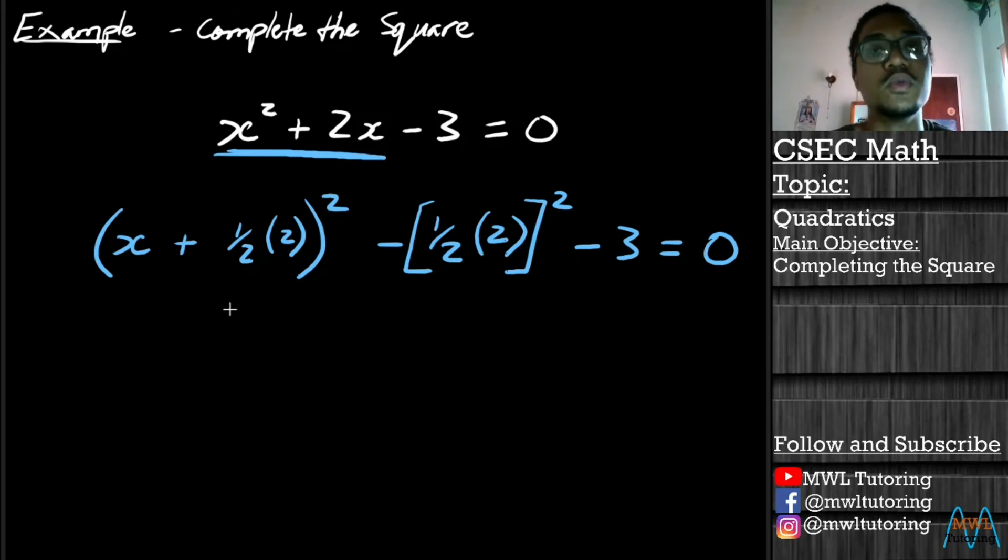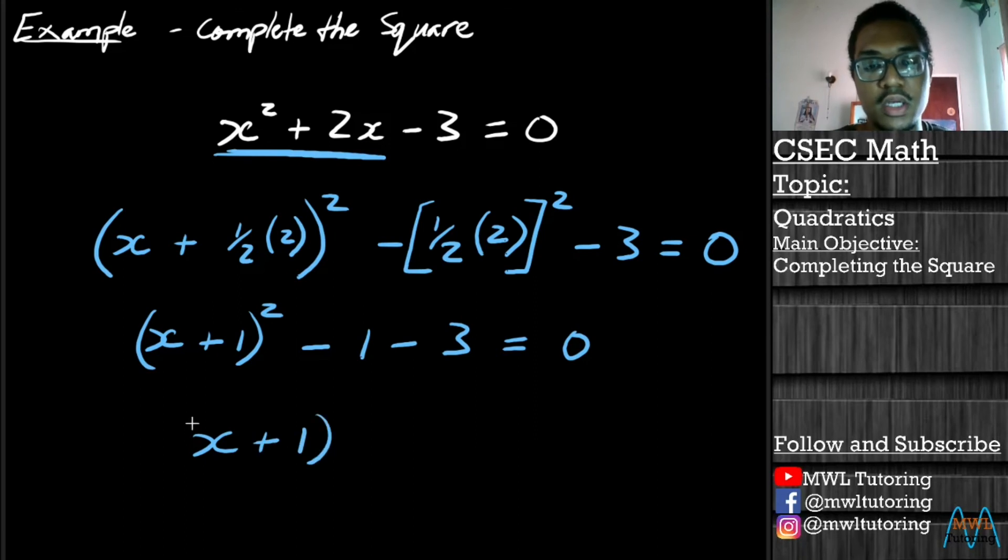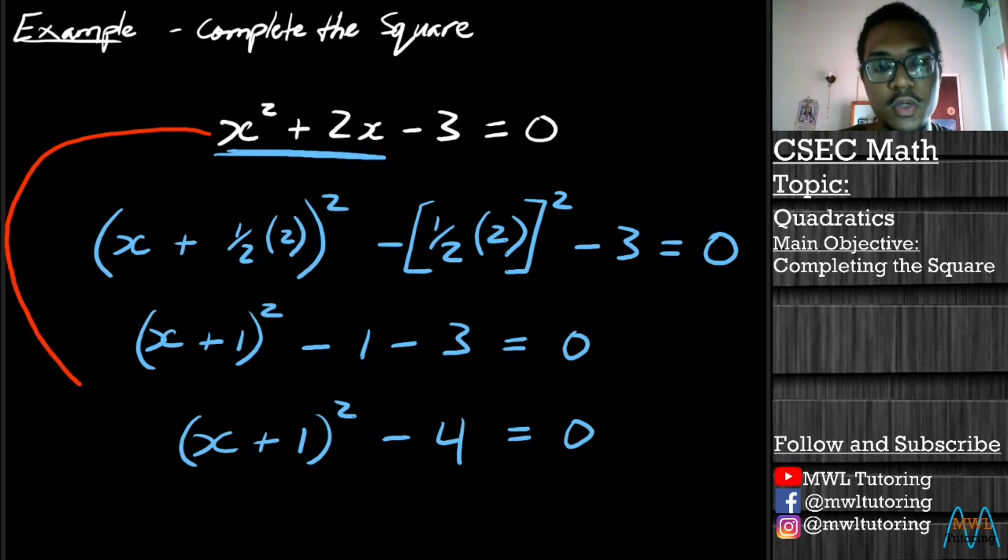And we're going to keep working it out. So a half of 2 is simply 1. So we have (x + 1)² - 1 and 1 squared is 1, minus 3 = 0. And now we're just going to join the minus 3 and the minus 1 together. And we get (x + 1)² - 4 = 0. And that is it there. We've successfully completed the square. And we've converted the general form in white here all the way down to this completed square form in blue.